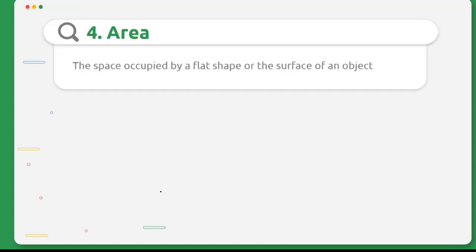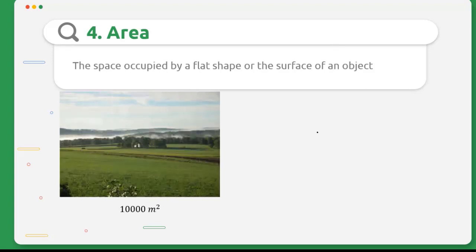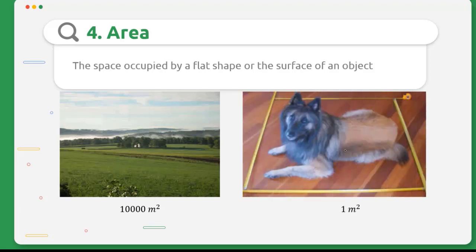Last, we will learn about area. Area has a definition: the space occupied by a flat shape or the surface of an object. For example, this land has an area of 10,000 m², and this dog is waiting inside 1 m² floor.